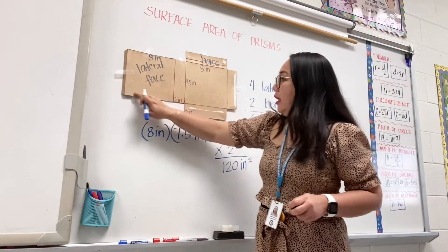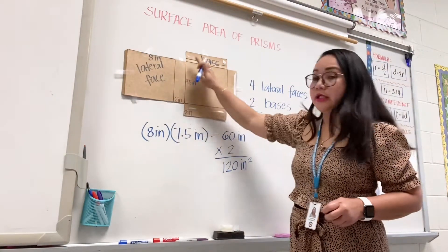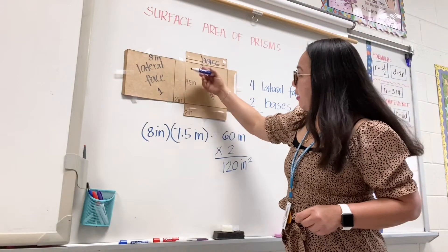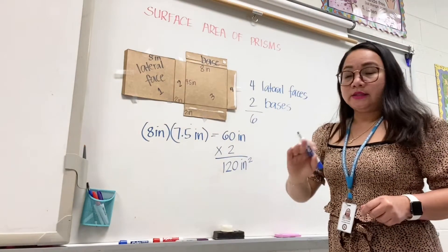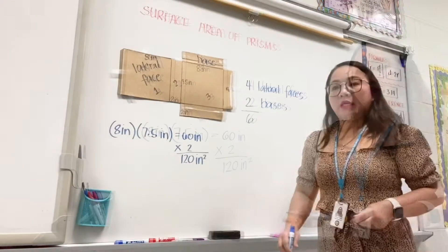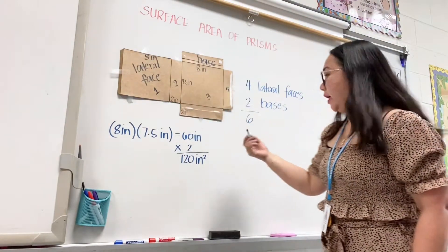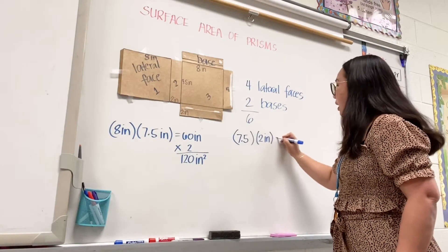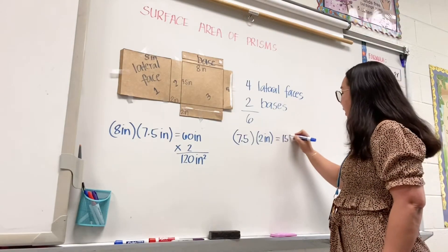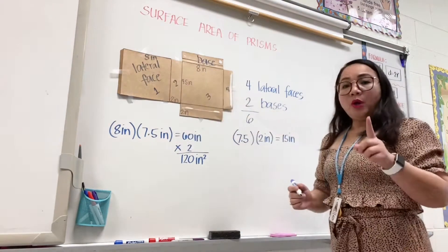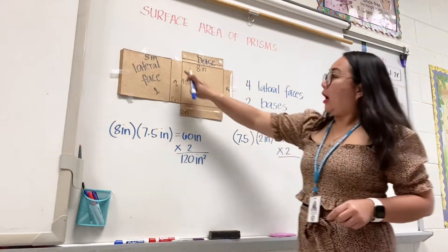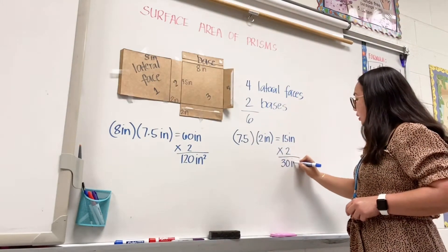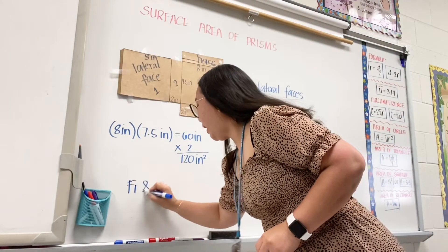So this one right here is sixty inches squared and the other one is also sixty inches squared, which gives you one hundred twenty inches squared. We will also solve for lateral face number two and number four — take note they have the same dimensions. The measure of this side is seven and five-tenths inches, times this side which is two inches: seven and five-tenths times two is fifteen inches. Since there are two, multiply by two — that gives thirty inches squared. So this is for face two and face four.